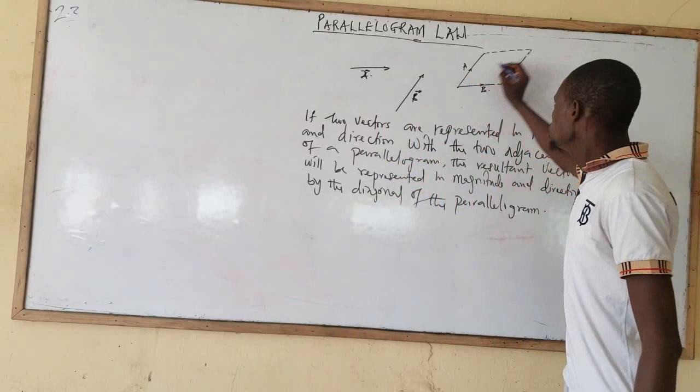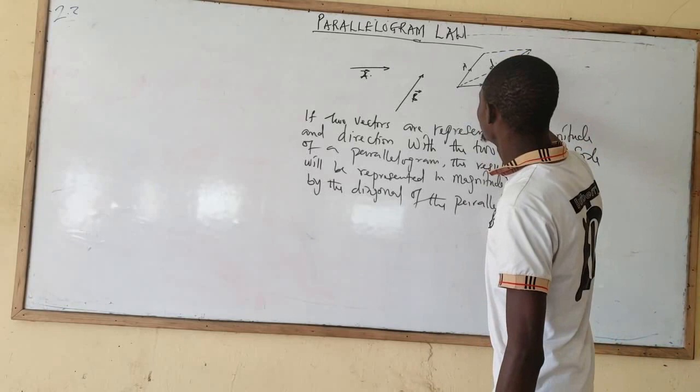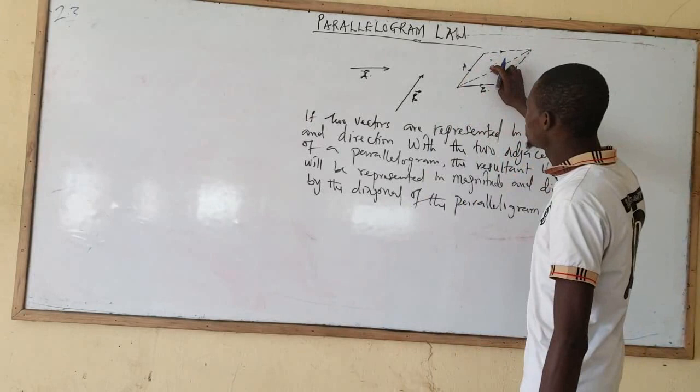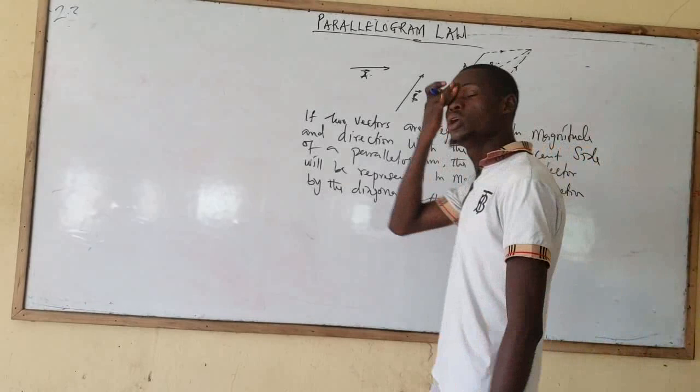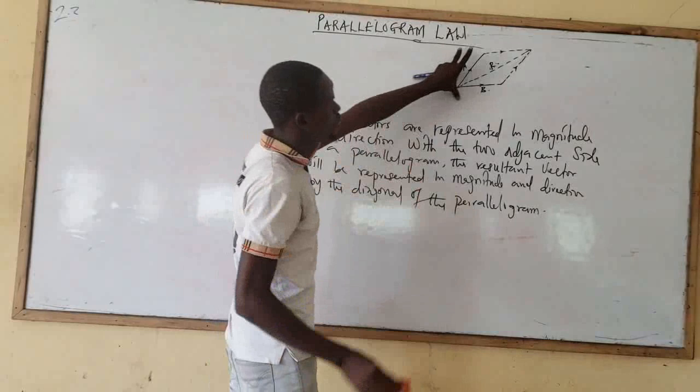The diagonal is a line that is drawn from one edge of the parallelogram to the other edge. This line here — we call this the diagonal. What we are trying to say is that this arrow is moving like this, this side should be parallel to this, and this side should be parallel to that. So if we have two vectors represented in magnitude and direction, the diagonal should represent the resultant vector. That is what the parallelogram law of vectors is talking about. Now let's look at how to add these vectors together using this parallelogram law.